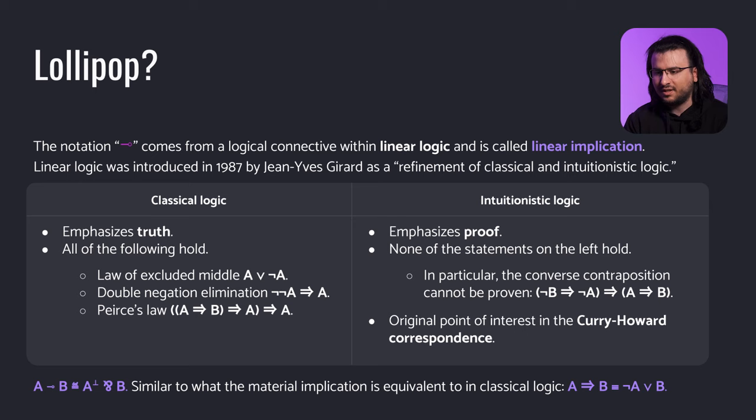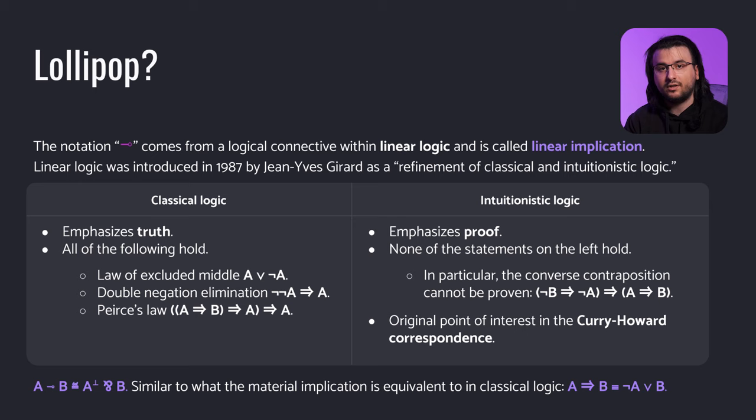Consider the lollipop operator. This is a binary logical connective known as linear implication, defined in linear logic, which inspired linear types. Linear logic was first introduced by Jean-Yves Girard in 1987 as a refinement of classical and intuitionistic logic.